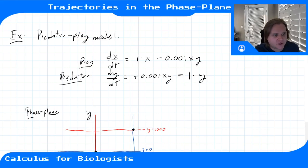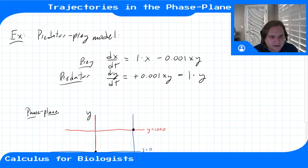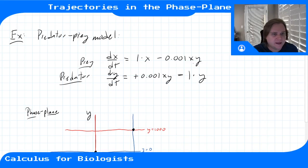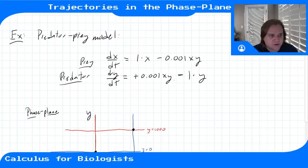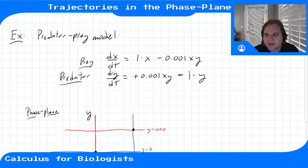To review: the prey are governed by dx/dt, the rate of change of x (the prey population). It equals x — positive growth rate of 1 — minus 0.001xy, where y is the number of predators. This is the predation term describing how many prey decrease due to being eaten. The coupled equation for the predators: the rate of change of y includes a growth term from predation and a natural death rate of minus y.